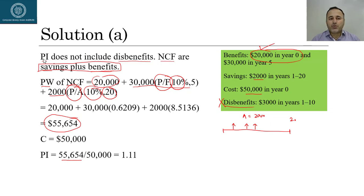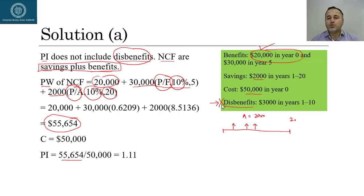The most important message from this slide: in profitability index calculation you must omit dis-benefits, because the profitability index is calculated for revenue alternatives — companies run on a profit basis that do not care about dis-benefits to the public. The only things they care about are their savings, benefits, and costs. That is the reason we disregard dis-benefits from the calculation.